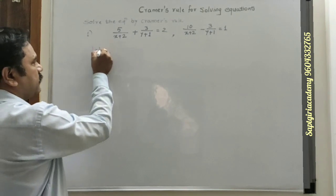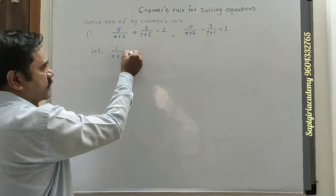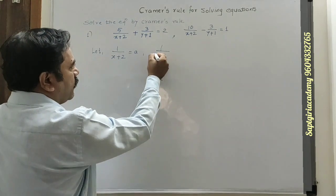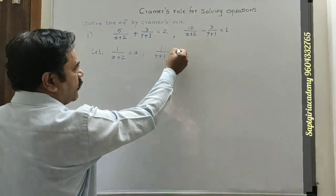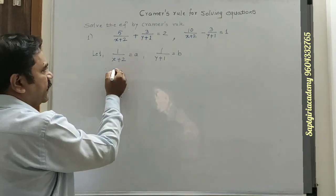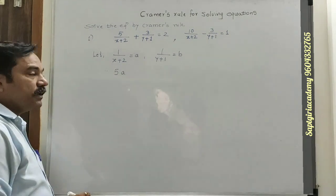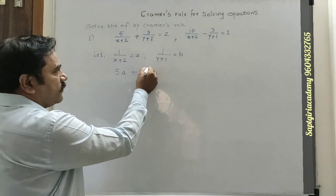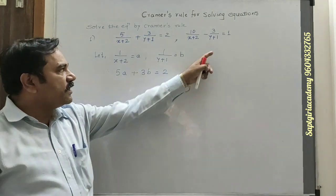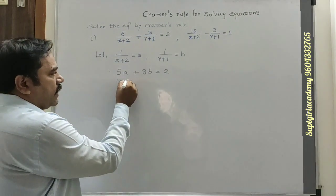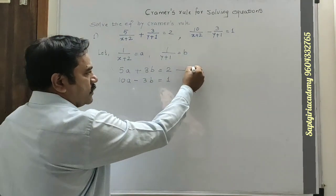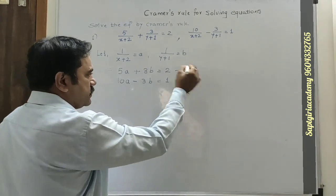So let 1 upon (x+2) be equal to 'a', and 1 upon (y+1) be equal to 'b'. The first equation then simplifies as 5a plus 3b is equal to 2. Similarly, the second equation becomes 10a minus 3b is equal to 1. So now the given equations are simplified.